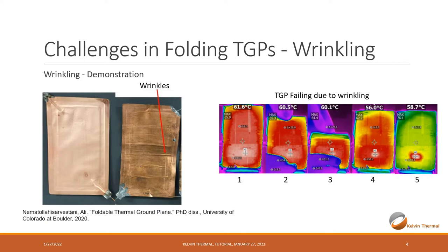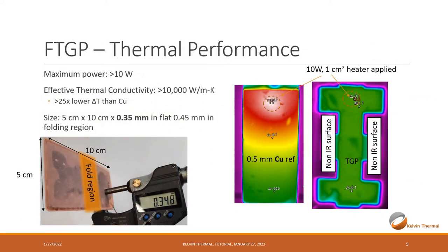We worked closely with the University of Colorado on this project to understand the mechanics of folding and wrinkling, and were then able to develop this foldable thermal ground plane where you can bend it back and forth over and over. One thing we like about it is that you can put in maximum power over 10 watts in a small heater area against gravity. It's important to note the maximum power when gravity is working against you, not just when it's flat. The temperature distribution of this foldable thermal ground plane is about 25 times more isothermal than copper, giving an effective thermal conductivity over 10,000 watts per meter Kelvin.